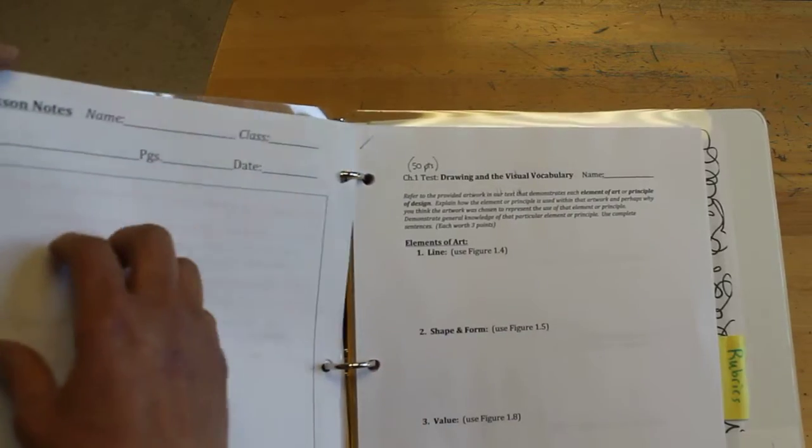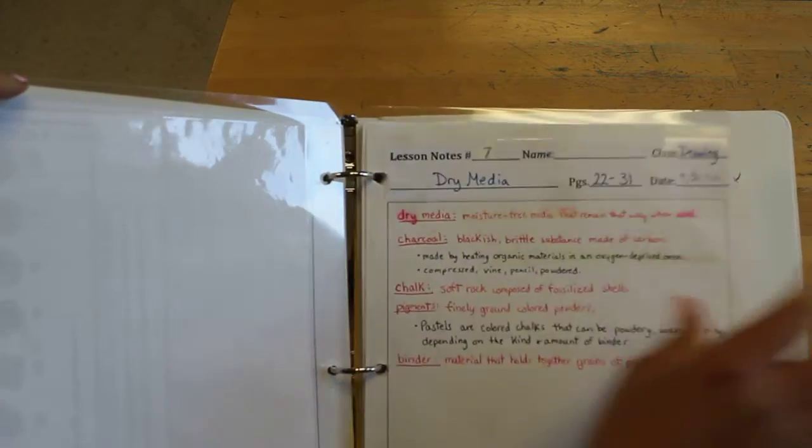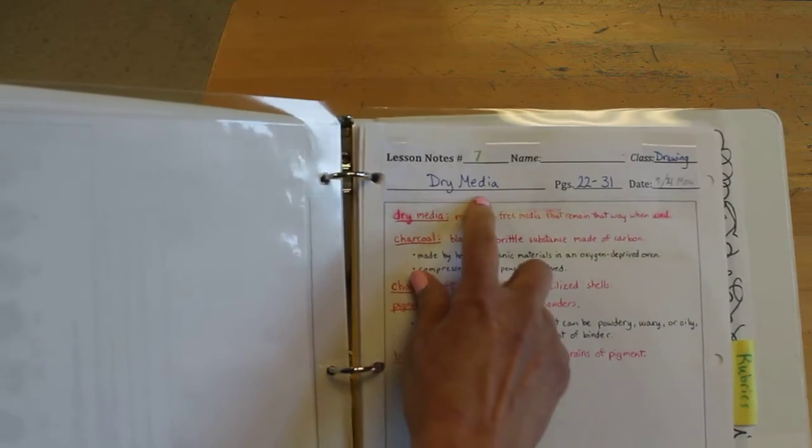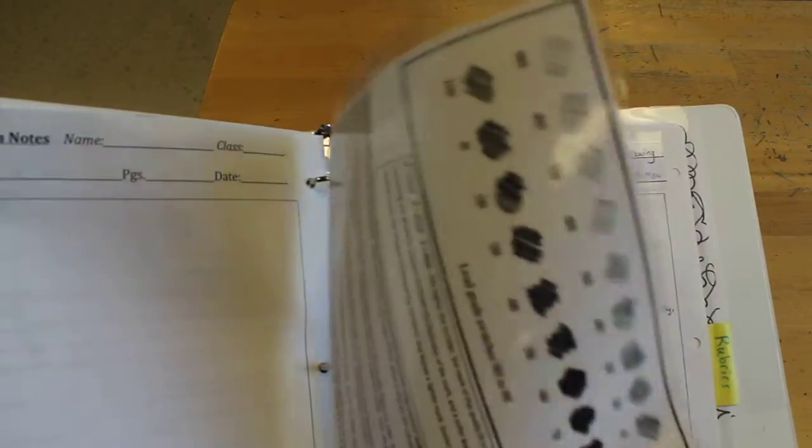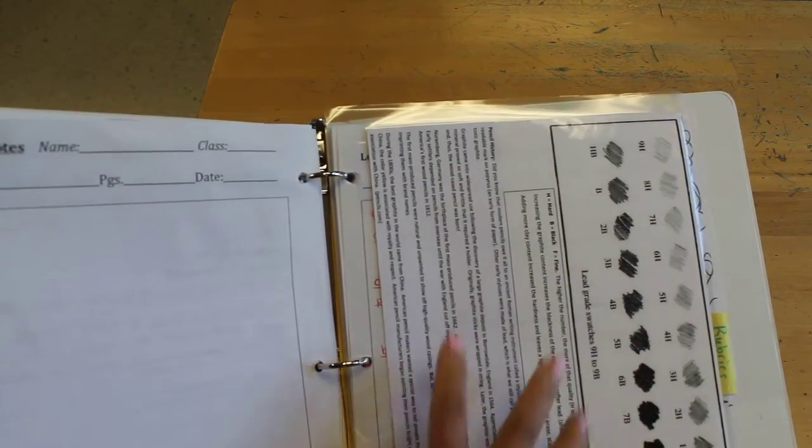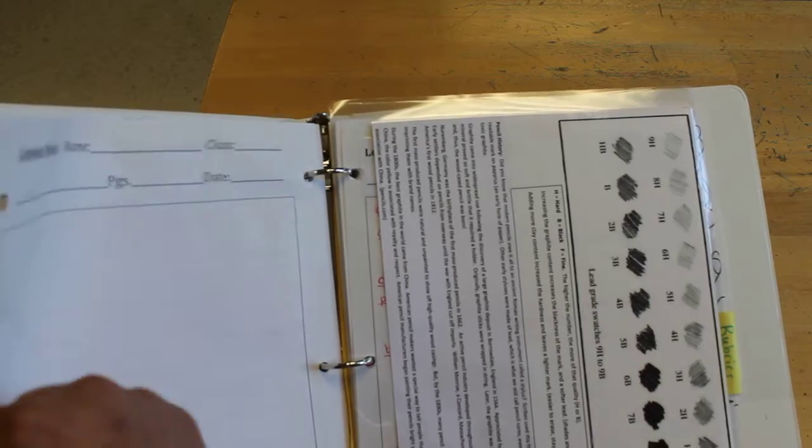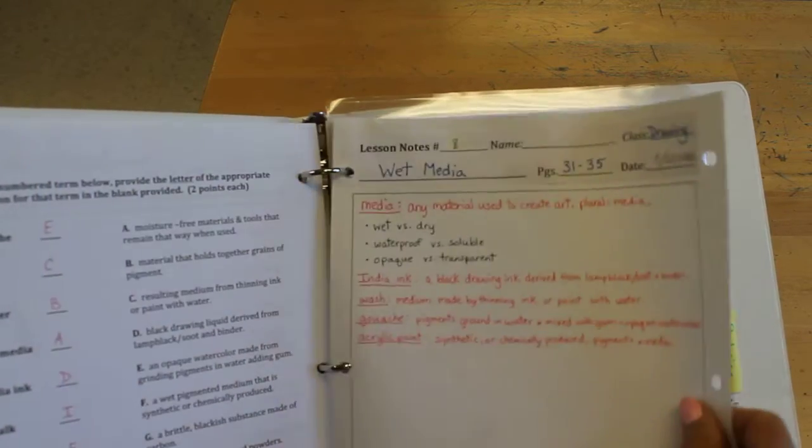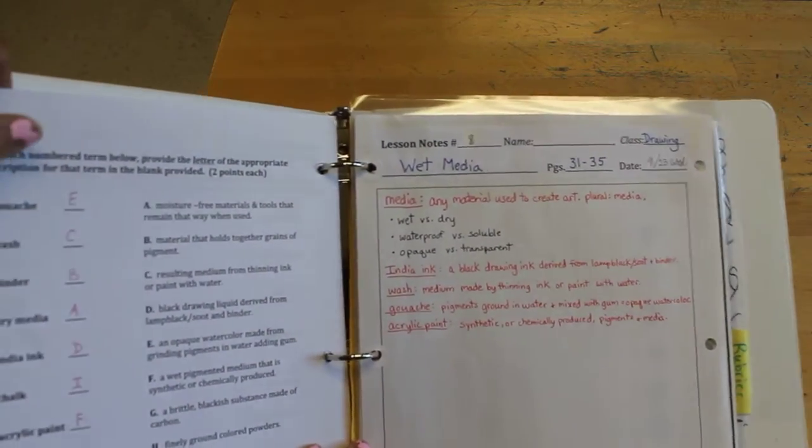And then we went into our notes for another chapter should be chapter two. Dry media which is number seven notes. And then I did give you a handout that you should have in there. And it had to do with the grades of pencils of graphite. And then we had notes number eight. Wet media.